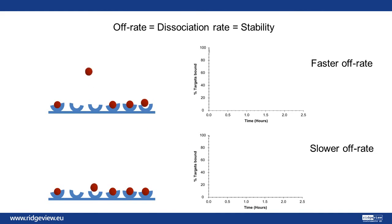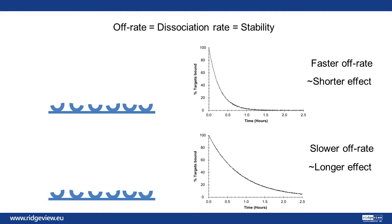The off-rate, or the dissociation rate, describes the stability of the interaction complex. The off-rate has been linked to the duration of drug efficacy, meaning that a stable interaction may result in the drug having a prolonged effect in the body.